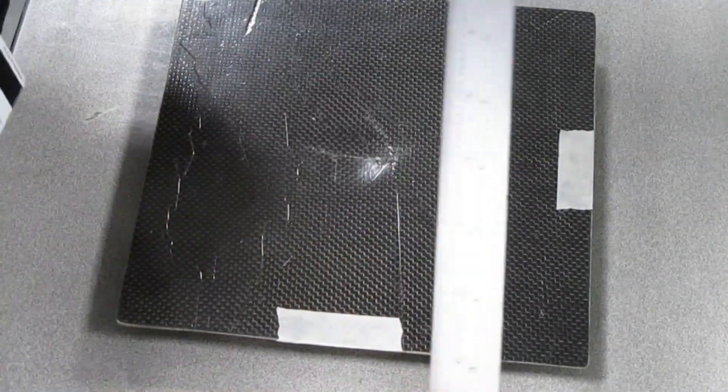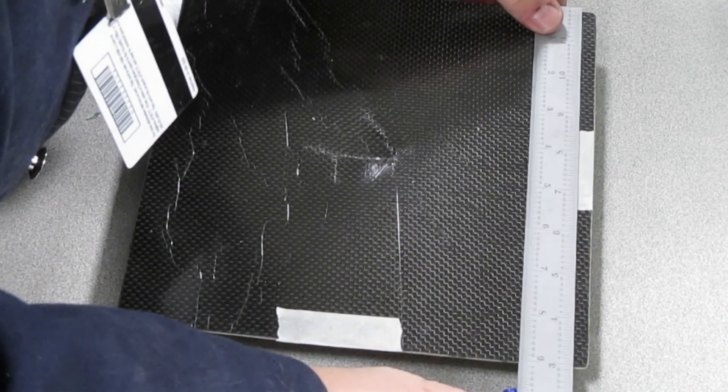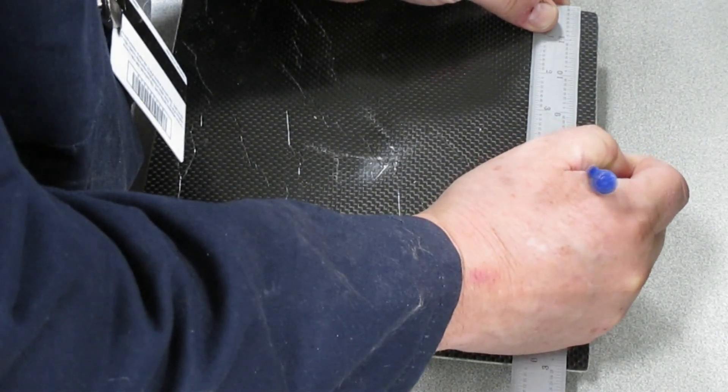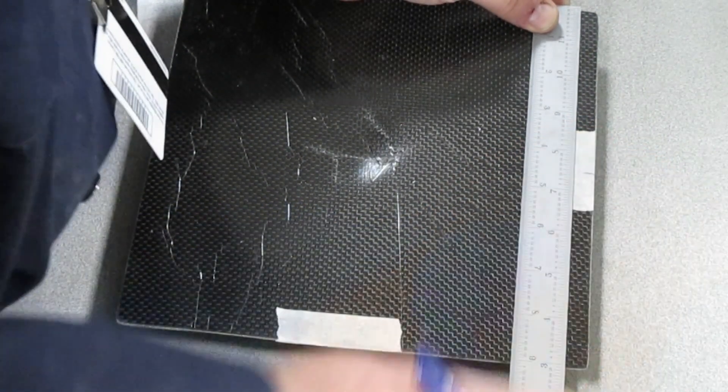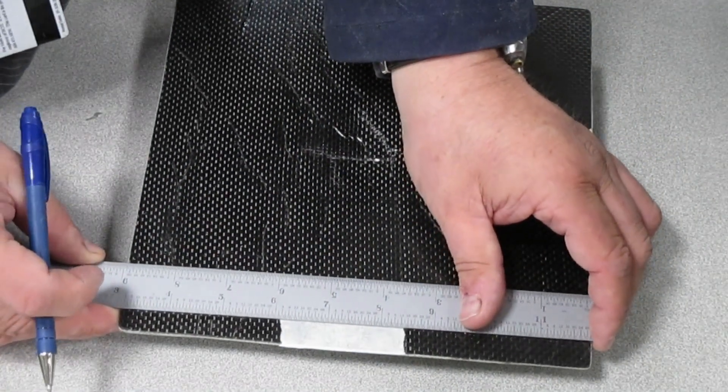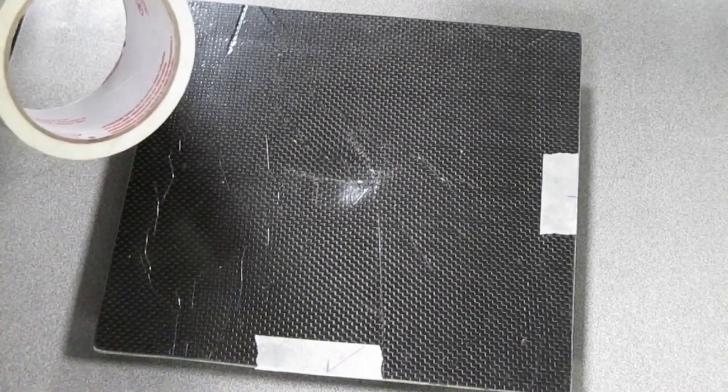I'm going to get a straight edge here and measure. I've got about nine inches, so at four and a half inches I'm going to mark halfway. I'm going to measure again and put a mark right along the edge.